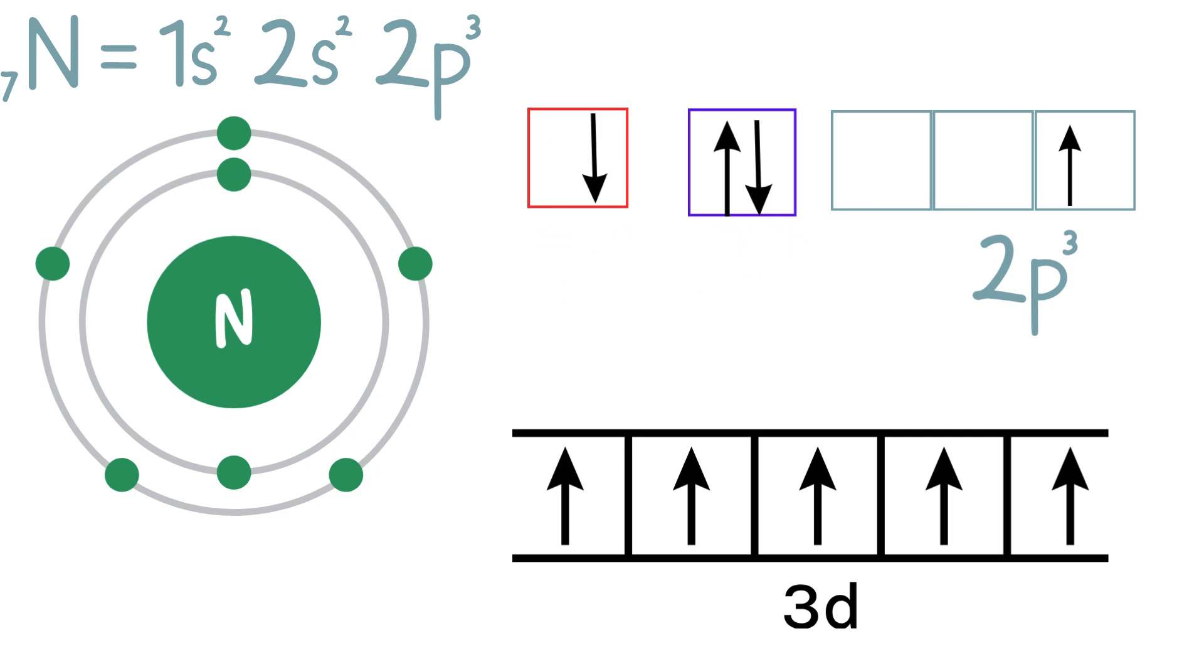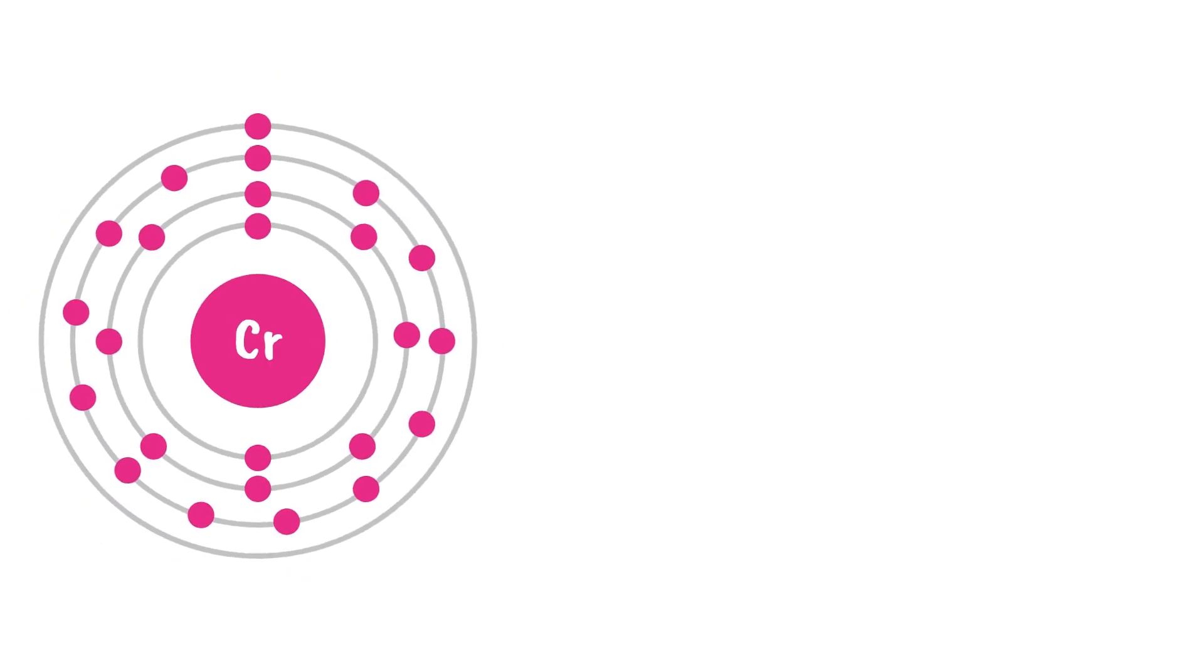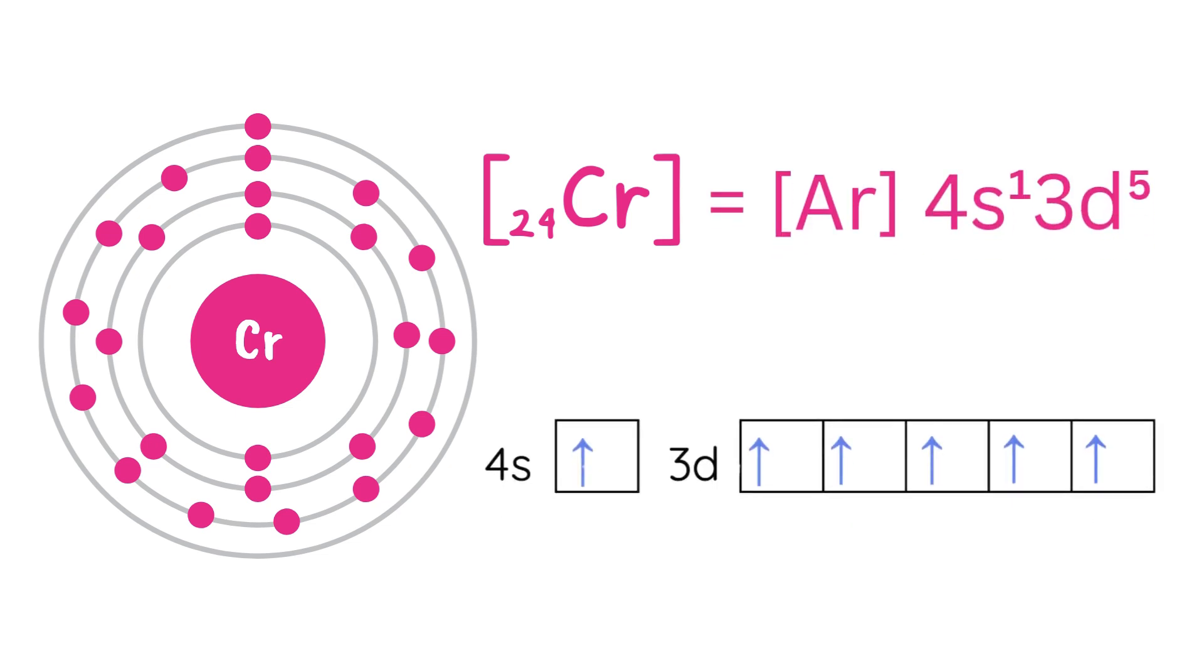Here's another example. The electronic configuration of chromium. Chromium has an atomic number of 24, so its electronic configuration is 4s1 and 3d5. Notice that all 3d orbitals are half-filled before moving to higher energy levels. This half-filled state provides extra stability for the atom.